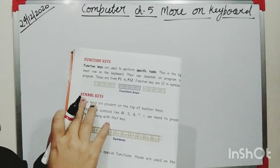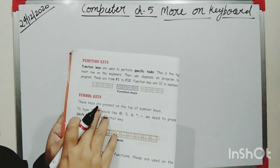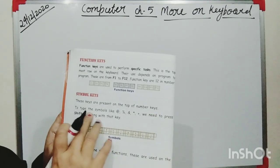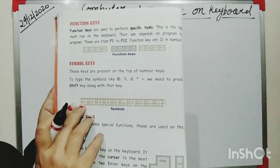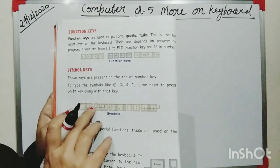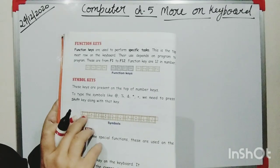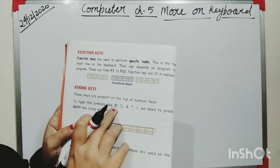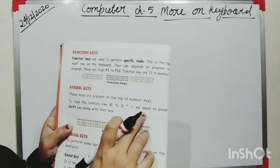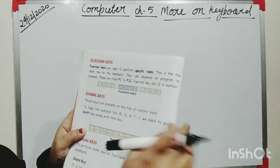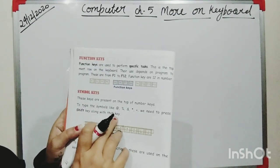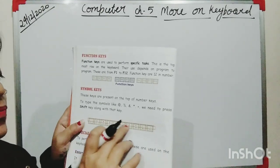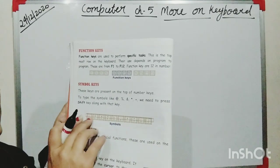The next key is the symbol key. These keys are present on the top of the number keys. To type symbols like the at sign, percentage, and many others, you need to press the Shift key along with that key. Then you can get these symbols.